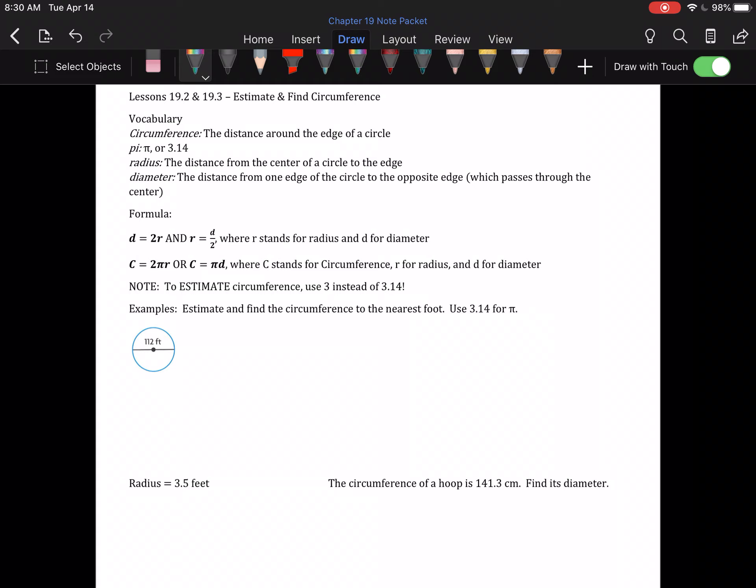In terms of a formula for finding the circumference, we have two, but they're the same thing: 2 times pi times the radius, or pi times the diameter. This is because multiplication is commutative, which means I can do it in any order. So I don't have to do 2 times pi times r, I can do 2 times r times pi, and 2 times r is d.